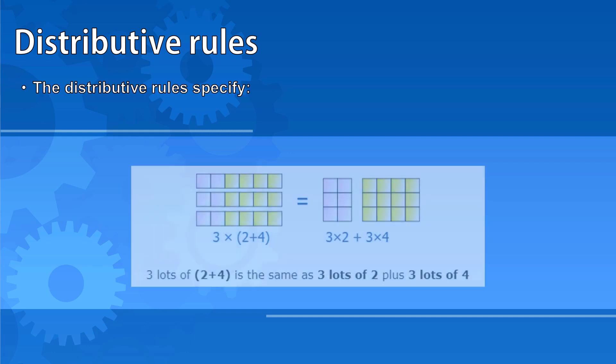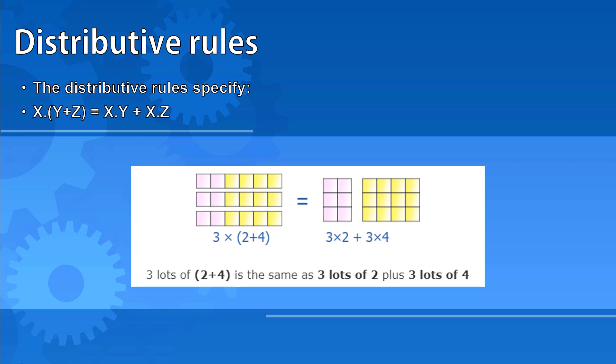Distributive rules work like the distributive rules from mathematics, with ANDs taking the place of multiply and OR taking the place of plus. This means x AND the result of y OR z is the same as saying x AND y OR x AND z. Similarly, the result of x OR y AND the result of w OR z is the same as saying x AND w OR x AND z OR y AND w OR y AND z.